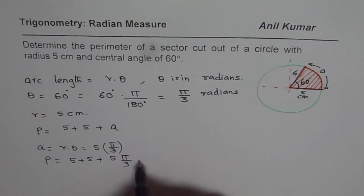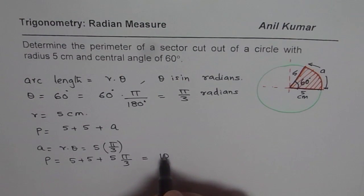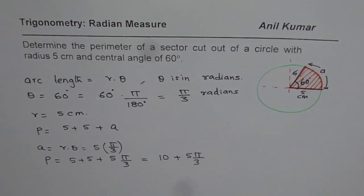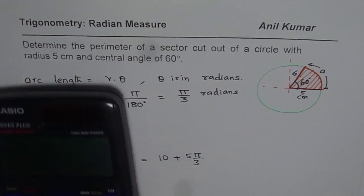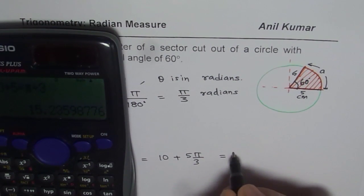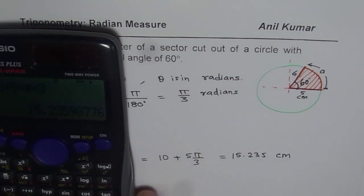So that is what it is. So now we can use the calculator and find approximate value, which is 10 plus 5π by 3. You could use π as 3.14. So it is slightly more than 15. Let us calculate and figure it out. So we have 10 plus 5 times π divided by 3 equals to approximately 15.235 and the units are centimeters.